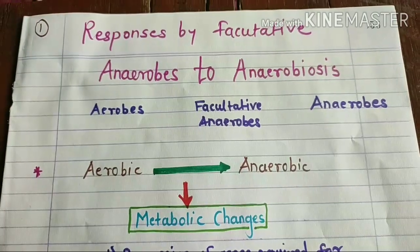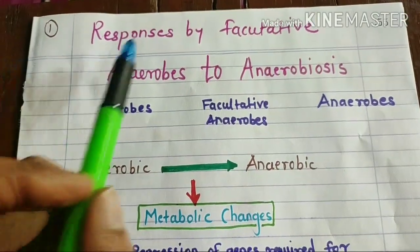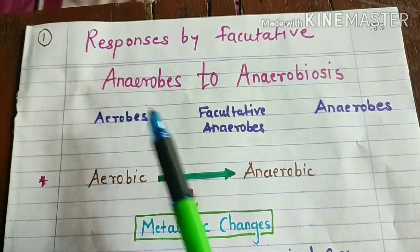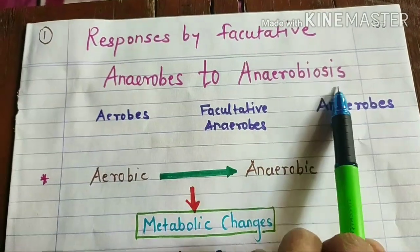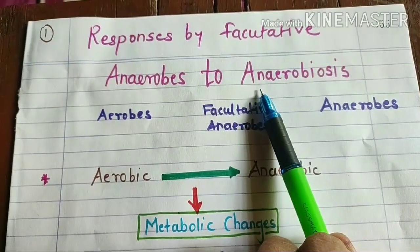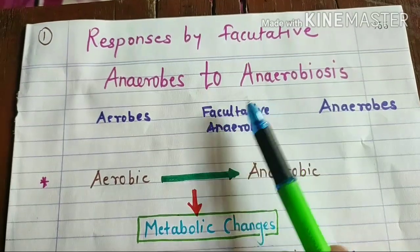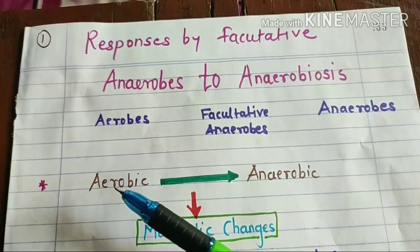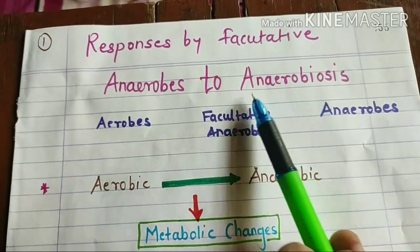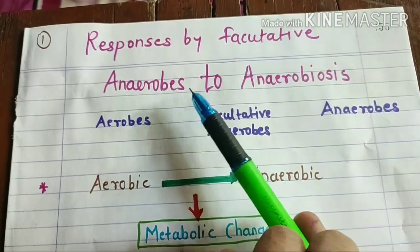Hello everyone. In this video lecture we will be studying about responses given by facultative anaerobes to anaerobiosis. Anaerobiosis occurs when an organism is shifted from aerobic condition to anaerobic condition, and this occurs only in facultative anaerobes.